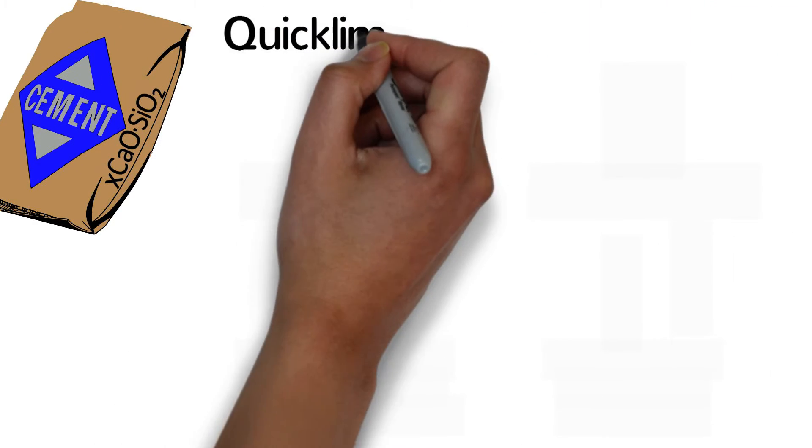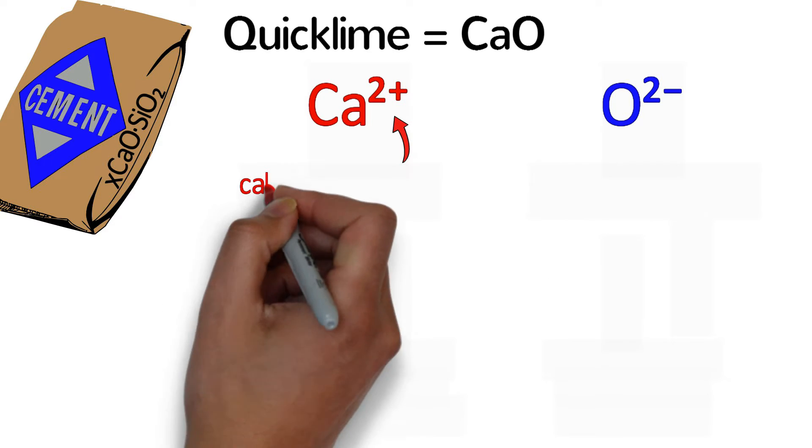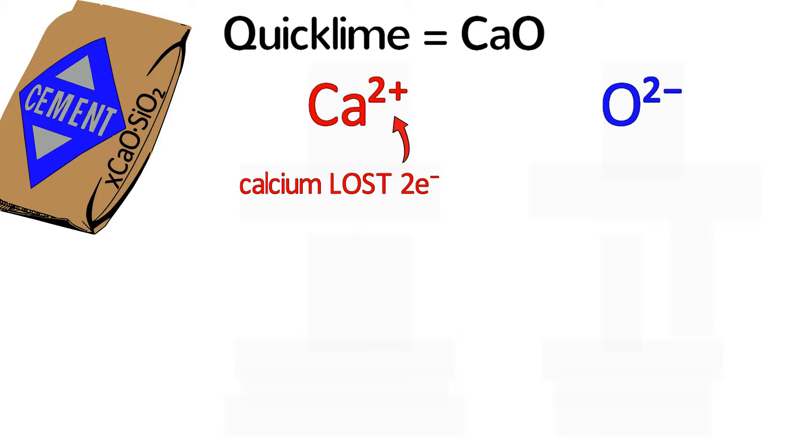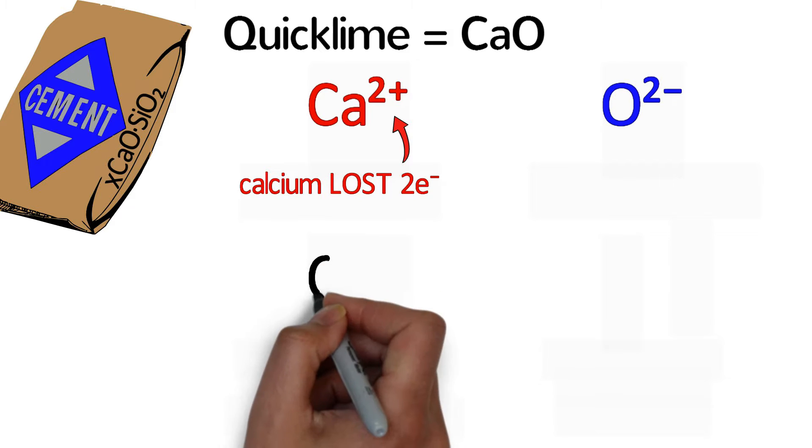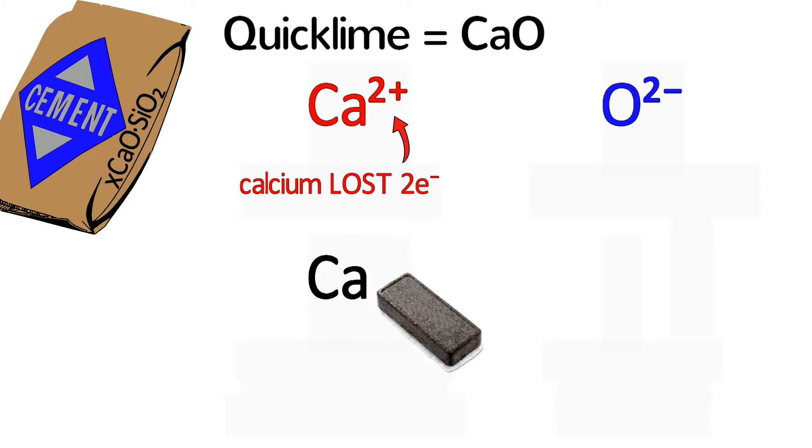Quicklime is composed of calcium oxide, which is an ionic compound of calcium 2+ ions and oxide 2- ions. The positive 2 charge of calcium tells us that calcium has lost two electrons. Calcium, which is in the second column of the periodic table, has two valence electrons as an atom. If it loses two electrons to become positively charged, it now has zero valence electrons.